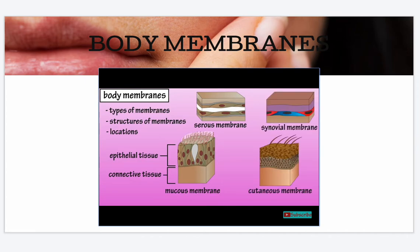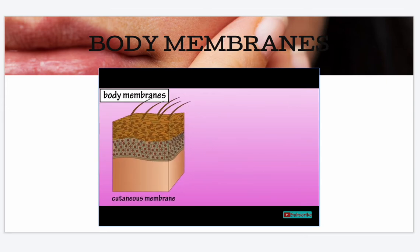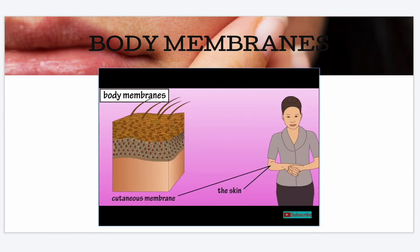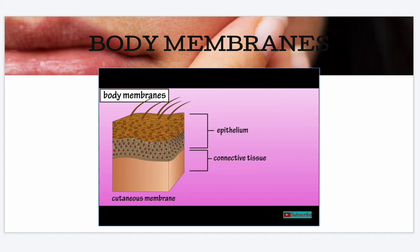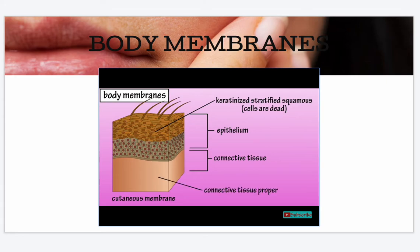Let's start by looking at the cutaneous membrane, which is also known as the skin. It is composed of a top layer of epithelium and a bottom layer of connective tissue. The top epithelial layer is comprised of keratinized stratified squamous epithelium, in which the top superficial layers of cells are dead. The bottom connective tissue layer is made up of connective tissue proper, which contains many collagen fibers.